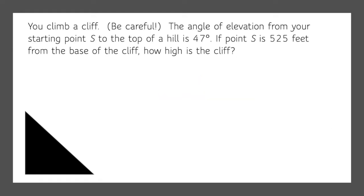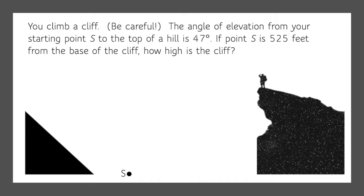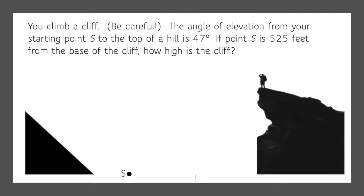You climb a cliff (be careful!). The angle of elevation from your starting point S to the top of the hill is 47 degrees. If point S is 525 feet from the base of the cliff, how high is the cliff? Anytime you get nervous in math, you start drawing a picture. So we have our starting point S and you at the top of the hill. We know that S is 525 feet from the base of the cliff, and we want to know how high the cliff is.